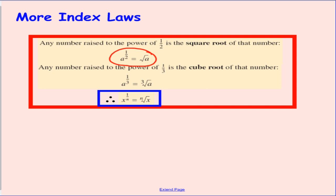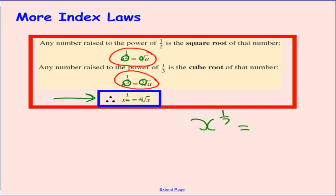Similarly, raising something to the power of a third is the same as cube rooting that number. So here we have a to the power of 1 over 3 becoming the cube root of a. We can now recognize a pattern: whatever number is the denominator is also the number that appears as the power of the root sign. So x to the power of 1 over 7 is the same as the seventh root of x.